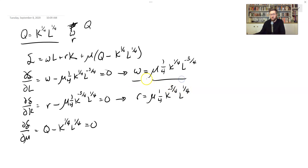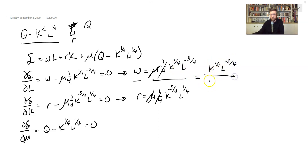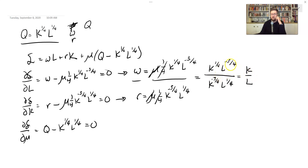Now we divide both sides of the first equation by the second. We divide the left-hand side W by R, and the right-hand side by the equivalent expression. The Mu's cancel, the 1/4ths cancel, and we end up with K to the 1/4th times L to the negative 3/4ths divided by K to the negative 3/4ths times L to the 1/4th. This simplifies to just K divided by L, because K's exponents give 1/4th minus negative 3/4ths equals 1, and L's exponents give negative 3/4ths minus 1/4th equals negative 1.